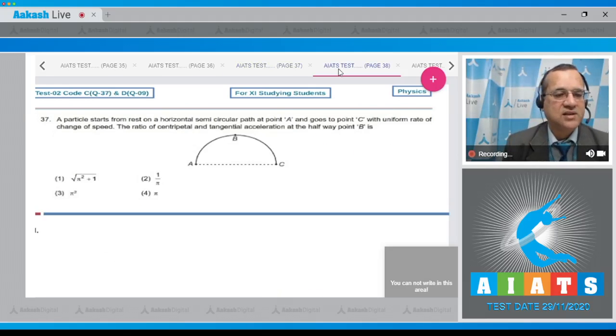Question number 37: A particle starts from rest on a horizontal semi-circular path at point A and goes to point C with uniform rate of change of speed. The ratio of the centripetal and tangential acceleration at the halfway point B. It is moving from A towards C along this path with uniform tangential acceleration. From A to B...